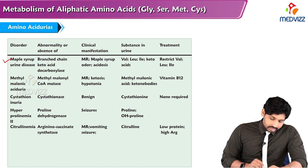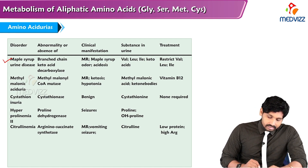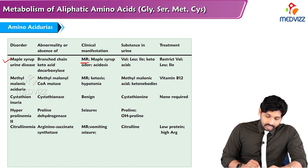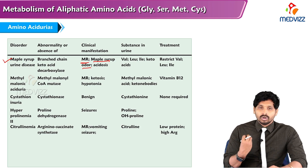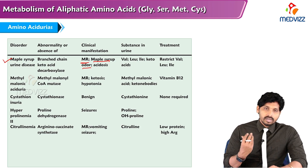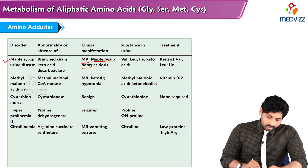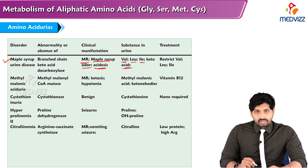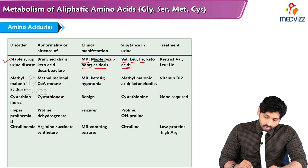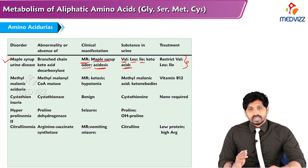Maple syrup urine disease is a branched-chain amino acid metabolism disorder. The enzyme deficiency is branched-chain ketoacid decarboxylase. Clinical manifestations include mental retardation and a maple syrup odor — a sweet smell — along with acidosis. The accumulated products in the urine are the ketoacids of valine, leucine, and isoleucine. Treatment is to restrict valine, leucine, and isoleucine in the diet.